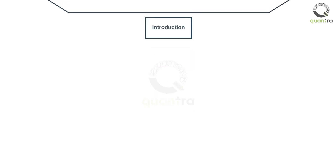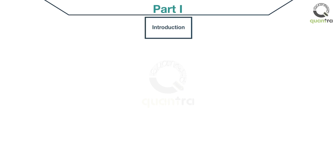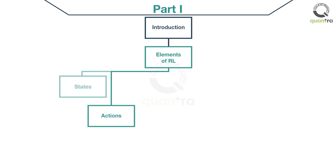You will start part 1 of this course by learning about the need for reinforcement learning in trading, and how it solves the delayed gratification problem, and why traditional machine learning algorithms fail in this problem. Then we move on to the basic elements of an RL model. These include the neural network, actions, states, and reward function.